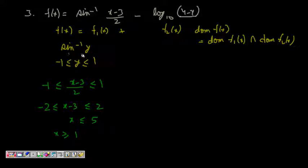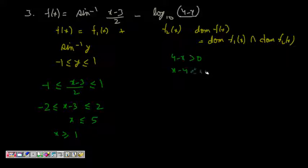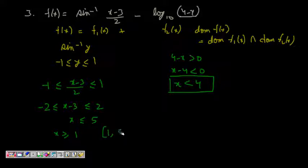Now for f2(x) = log base 10 of (4-x), we need 4-x > 0, which gives x < 4. So taking the intersection of [1, 5] and (-∞, 4), we get [1, 4]. So the domain of f(x) is [1, 4].